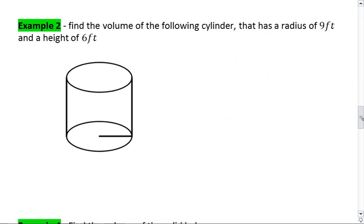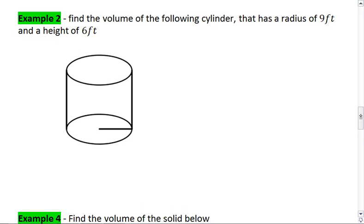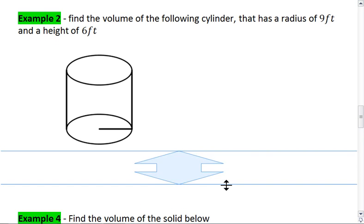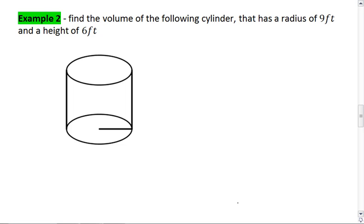Let's look at an example now. In example 2, I want you to find the volume of the following cylinder that has a radius of 9 feet and a height of 6 feet. Try this on your own first, and then resume the video when you're ready to check your answer.